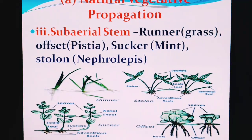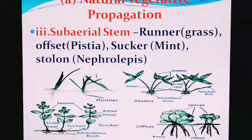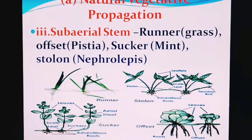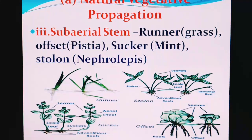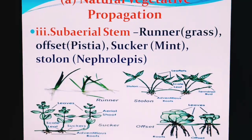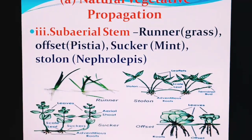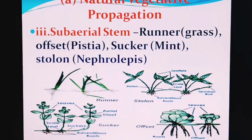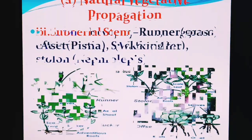Similarly, another sub-aerial stem type is the stolon. Another one is the sucker. In the case of the sucker, mint is a very good example. For stolon, the example is Nephrolepis, which is a pteridophyte — it is a fern. These represent natural vegetative propagation by using the sub-aerial stem.